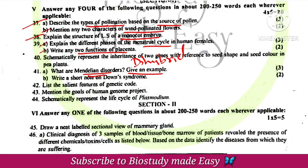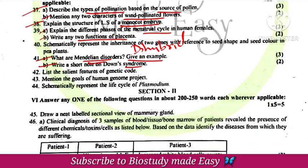These disorders follow Mendelian rules of inheritance — they are called Mendelian gene disorders. Next, write a note on Down syndrome — include the karyotype and symptoms.